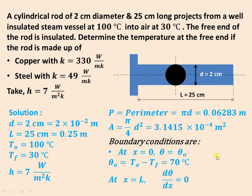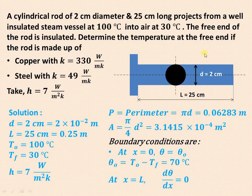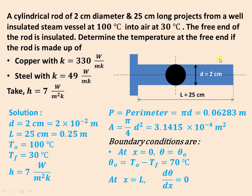Here we have a cylindrical rod of 2 cm diameter and 25 cm length. The temperature at the base is 100 degrees centigrade, and the temperature of the surrounding fluid — air — is 30 degrees centigrade. The free end of the rod is well insulated.